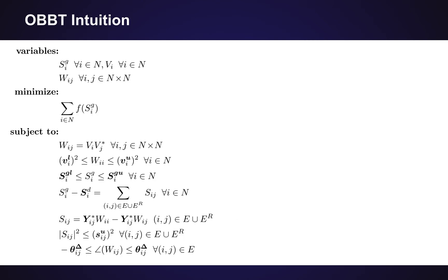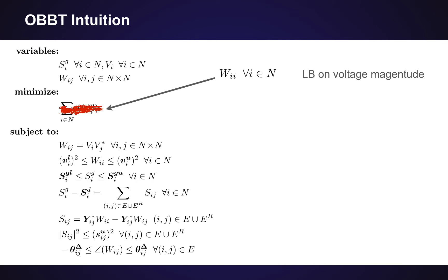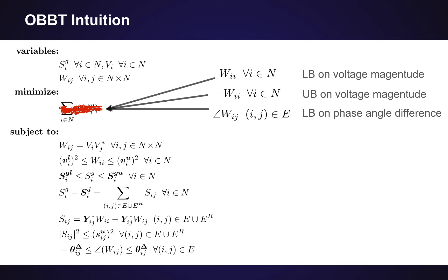What's the intuition of OBBT? This is our original AC power flow problem. We're going to ignore the original objective function, which minimizes cost, and replace it with different quantities of interest that will yield variable bounds. If we minimize W_ii, at the globally optimal solution we'll get a lower bound on the voltage magnitude. If we negate it, turning minimization into maximization, at the global optimal solution we'll get an upper bound. We can do the same trick for the angle of the W_ij variables, telling us how wide the angle difference can get on any branch in the network.